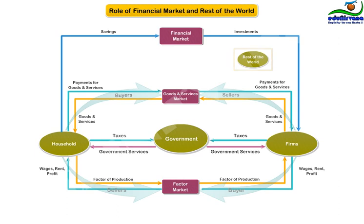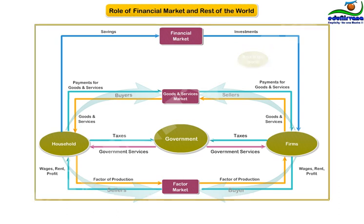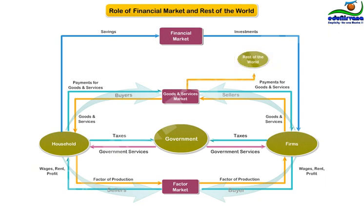Coming to the role of the rest of the world, economies across the world are integrated. An economy interacts with the rest of the world in the following areas: exports and imports of products and services, and financial savings and investments between the economy and the rest of the world. While exports and imports contribute to the products and services market, financial savings and investments affect the capital market.